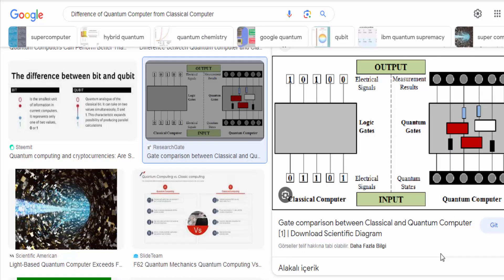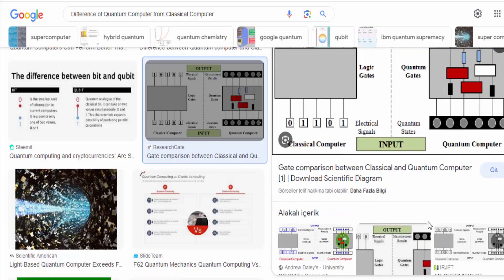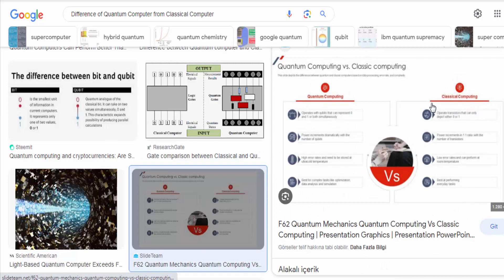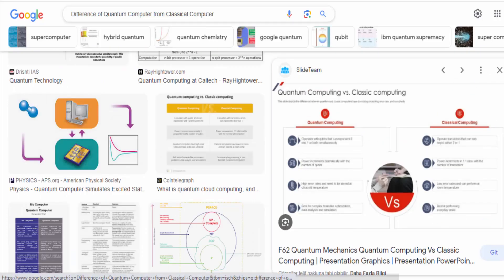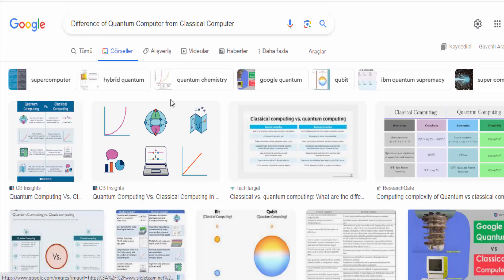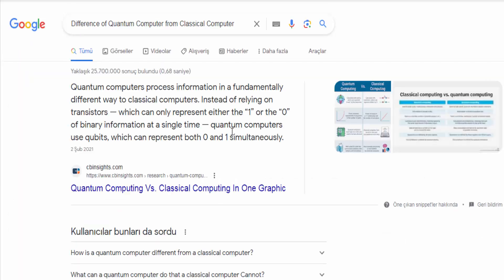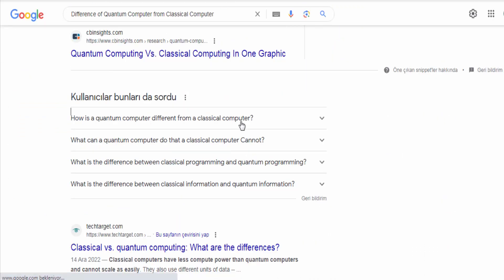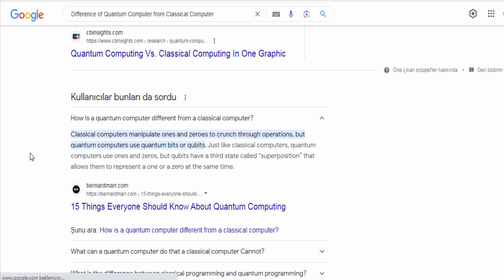Quantum error correction: Quantum systems are inherently susceptible to errors due to factors like decoherence and environmental noise. Quantum error correction techniques have been developed to protect qubits from errors and ensure the accuracy of computations. Error correction is crucial for the practical implementation of large-scale, fault-tolerant quantum computers.